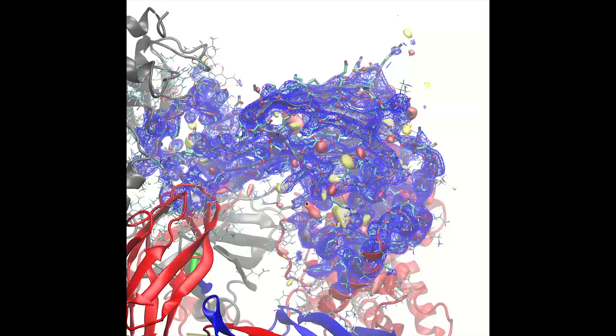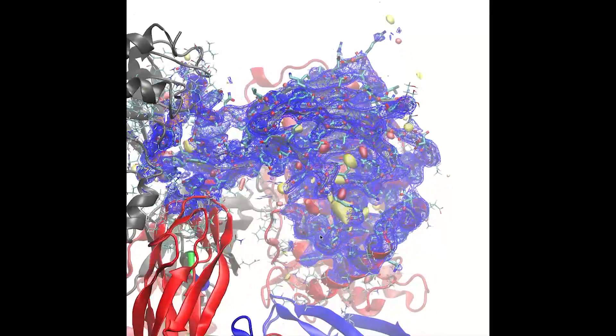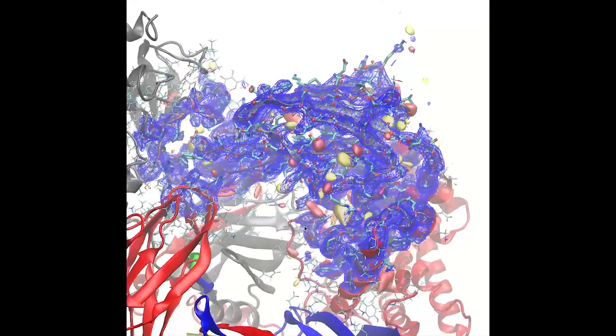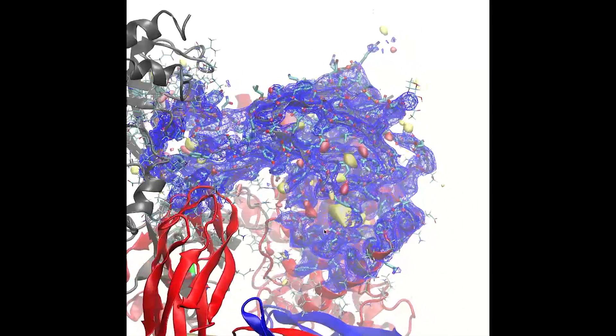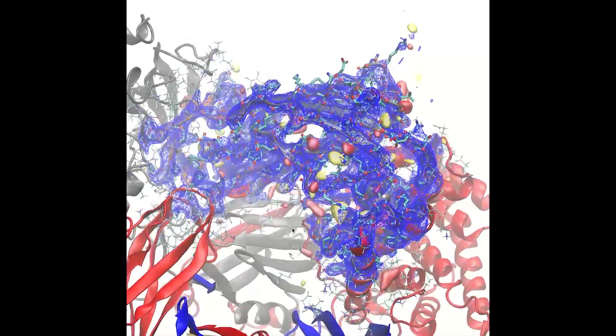In this video I will be using the 3.6 angstrom structure of Complement C4 Accession ID 4FXK to demonstrate the use of IMDFF to interactively explore and correct register errors in low resolution structures.